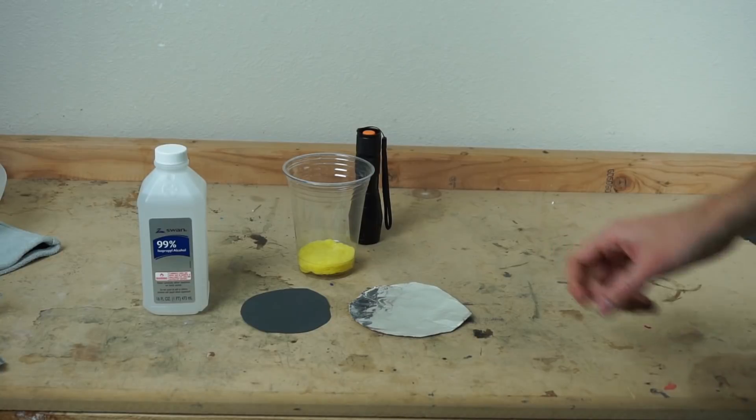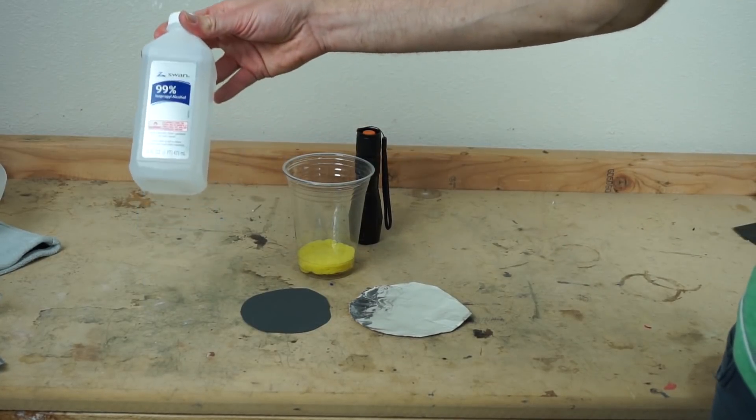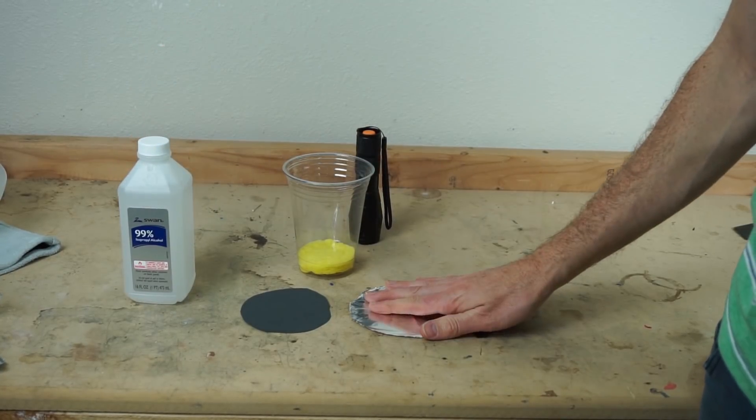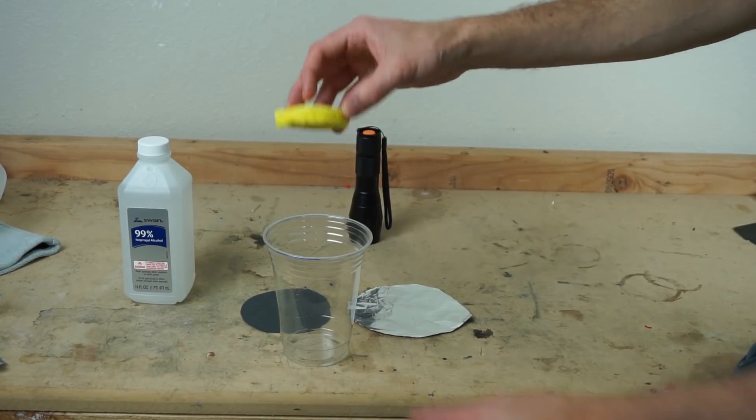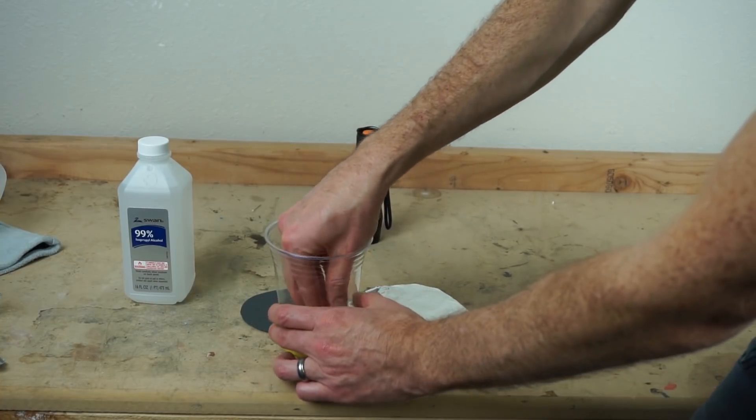Let me show you how you make it. All you need to do this is some rubbing alcohol, aluminum foil, some black paper, a sponge and a cup. So to do this what you do is you just get your sponge, put it in your cup.